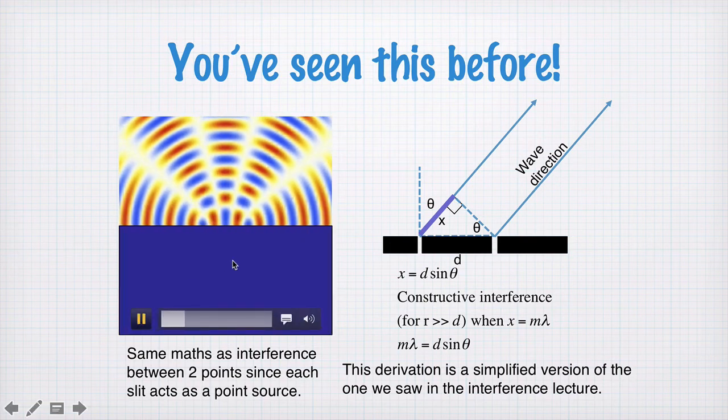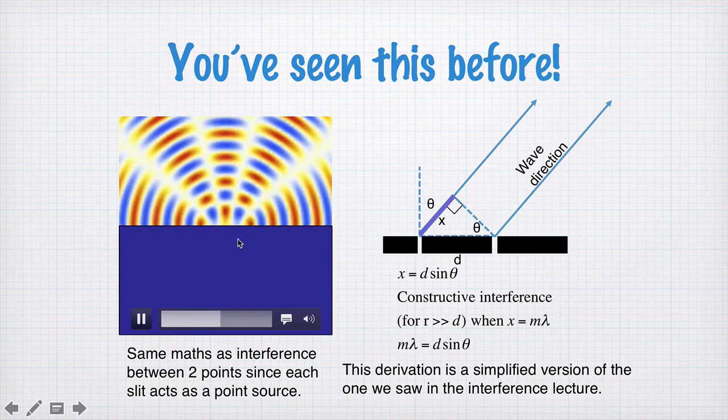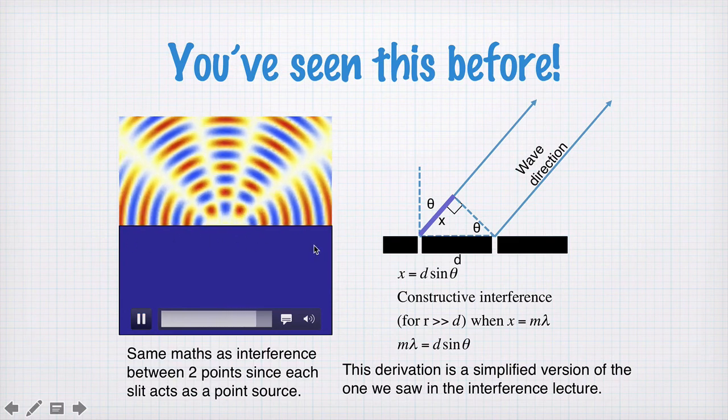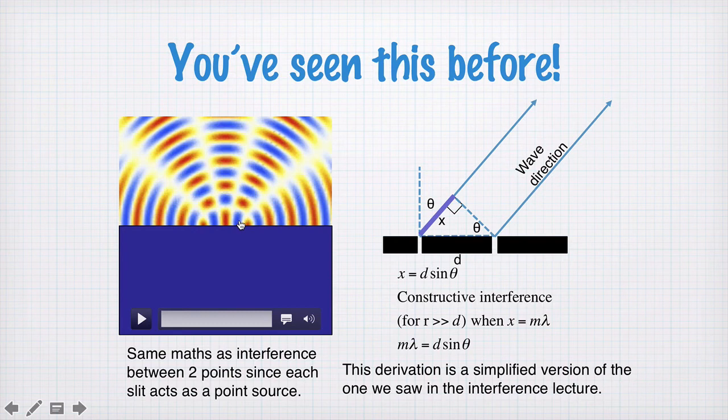Basically the double slit looks like two point sources, but we blank out half of the screen, and there we have the double slit diffraction pattern.